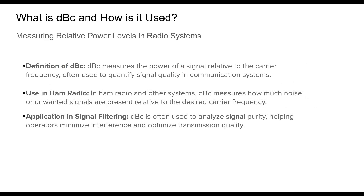Let's talk about dBc, or decibels relative to the carrier. It's commonly used in communication systems, including ham radio, to measure the level of noise or unwanted signals relative to the main carrier signal. It plays a key role in evaluating signal quality and purity. When hams talk about dBc, they are usually concerned with minimizing interference and ensuring that the signal-to-noise ratio remains optimal. This measurement is important for improving the clarity and readability of radio communications.